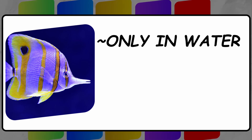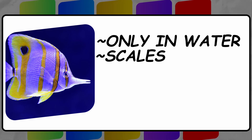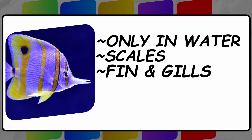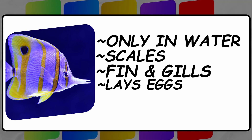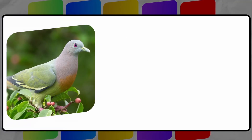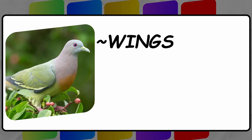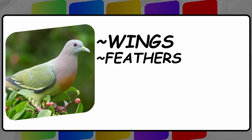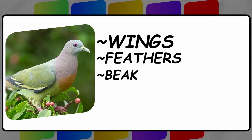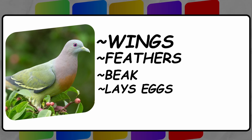Fish only live in water, have scales, fins and gills, and lays eggs. Birds have wings, feathers, peeps, and laid eggs.